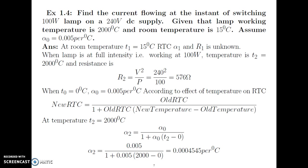Let us see the next example. Find the current flowing at the instant of switching a 100 Watt lamp on a 240 volt DC supply. Given that the lamp working temperature is 2000 degree Celsius, room temperature is 15 degree Celsius, and alpha0 equals 0.005 per degree Celsius. Here also, the resistances are not directly given — they are given in terms of power and voltage.